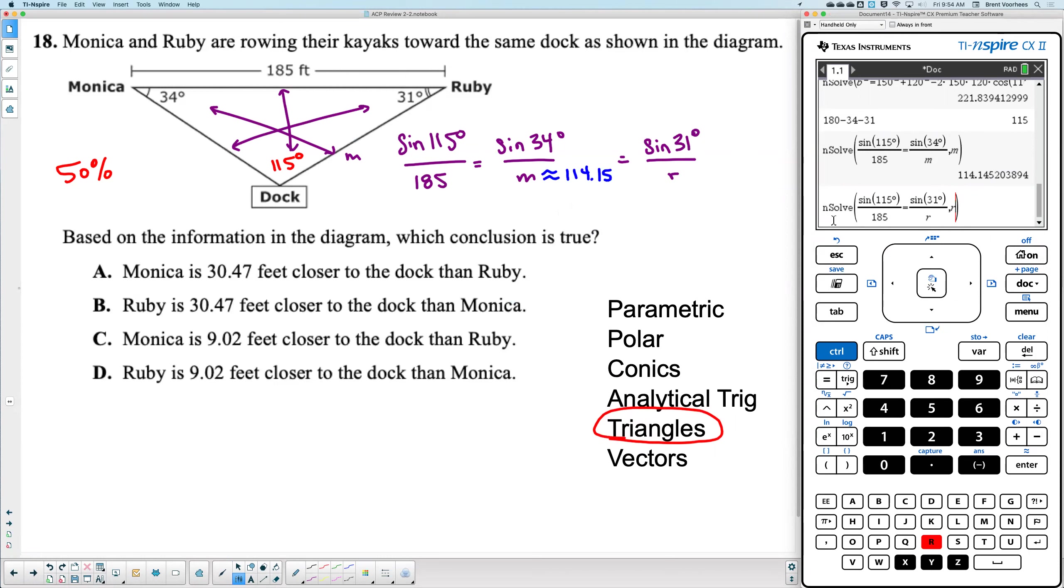So, I just copied basically the whole thing. All I'm doing is changing the second fraction from sine 34 over M to sine 31 over R. Press enter. What are you getting now? So, 105.13. Okay. So, this is now, we're saying Ruby is 105.13.